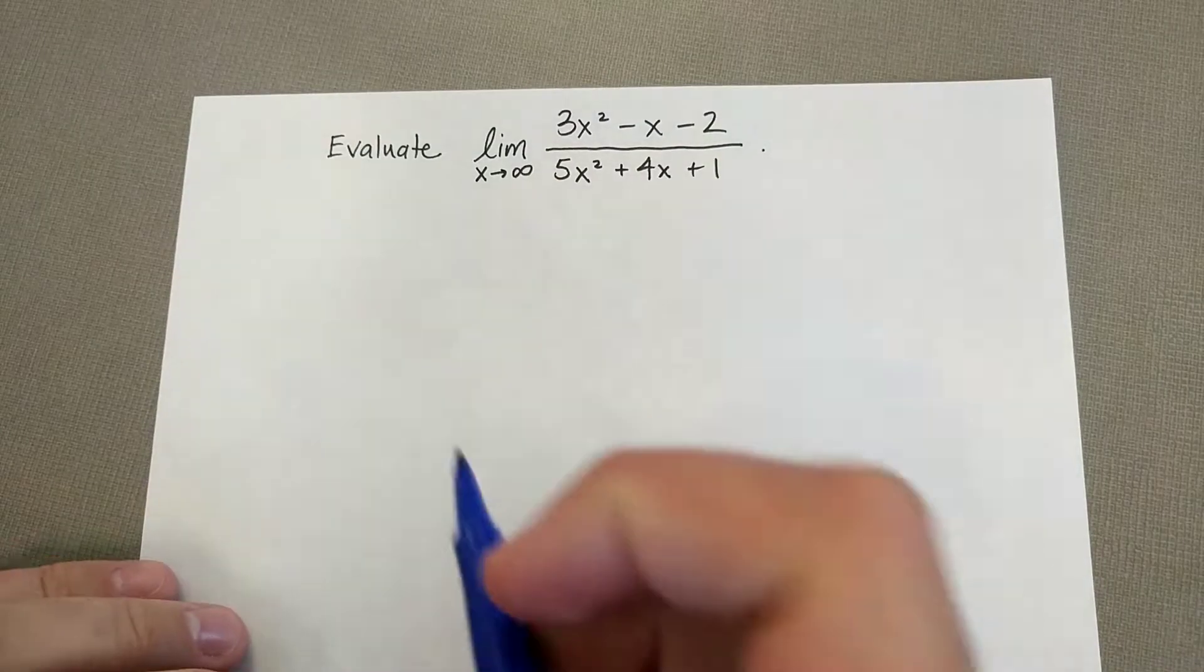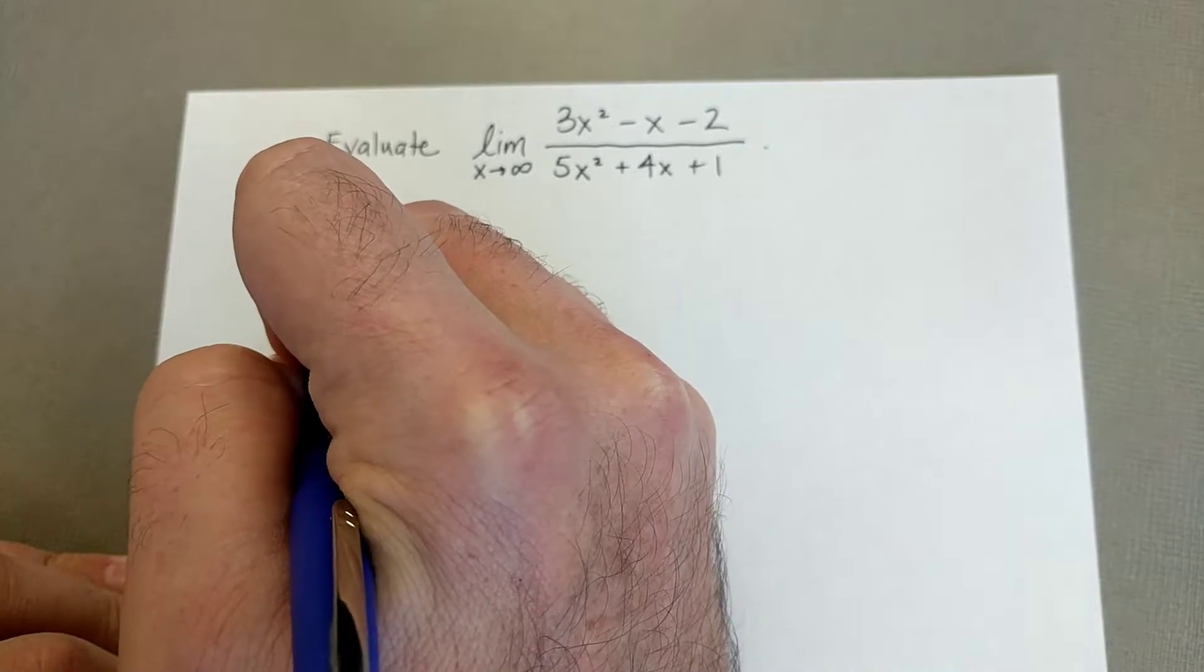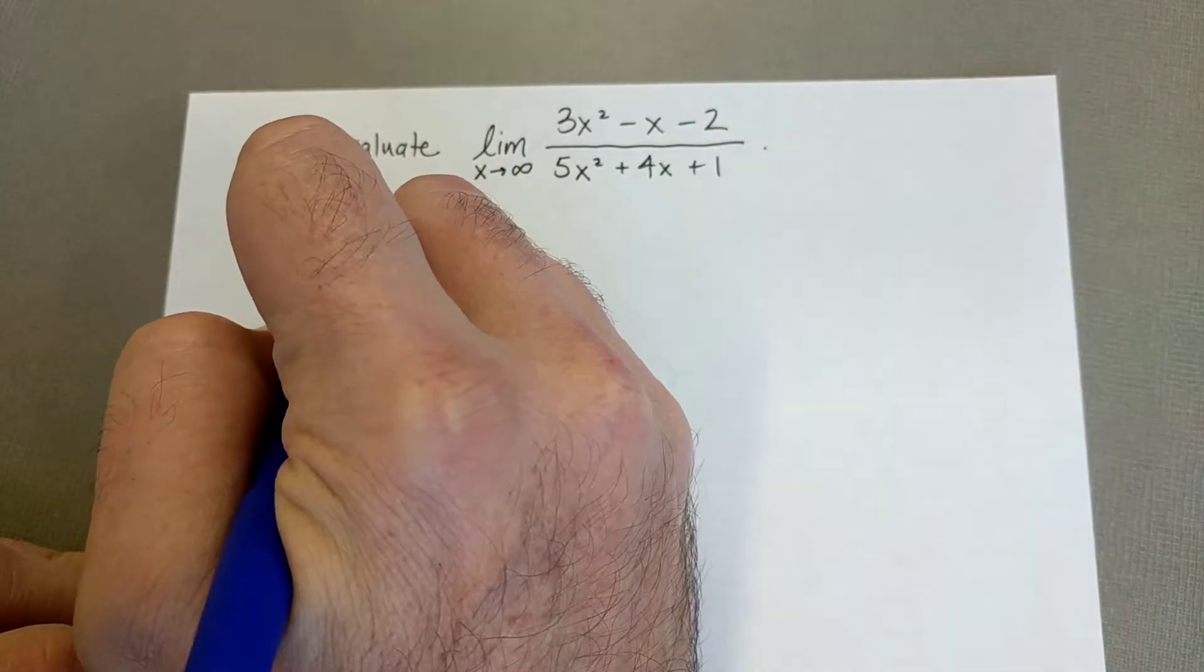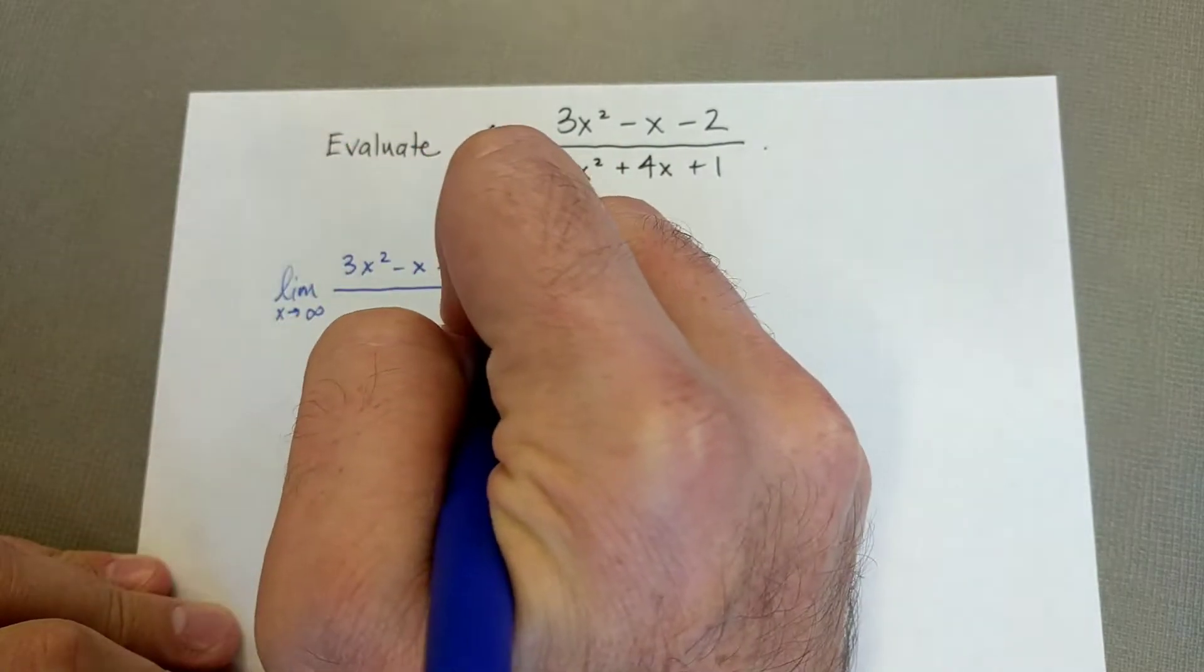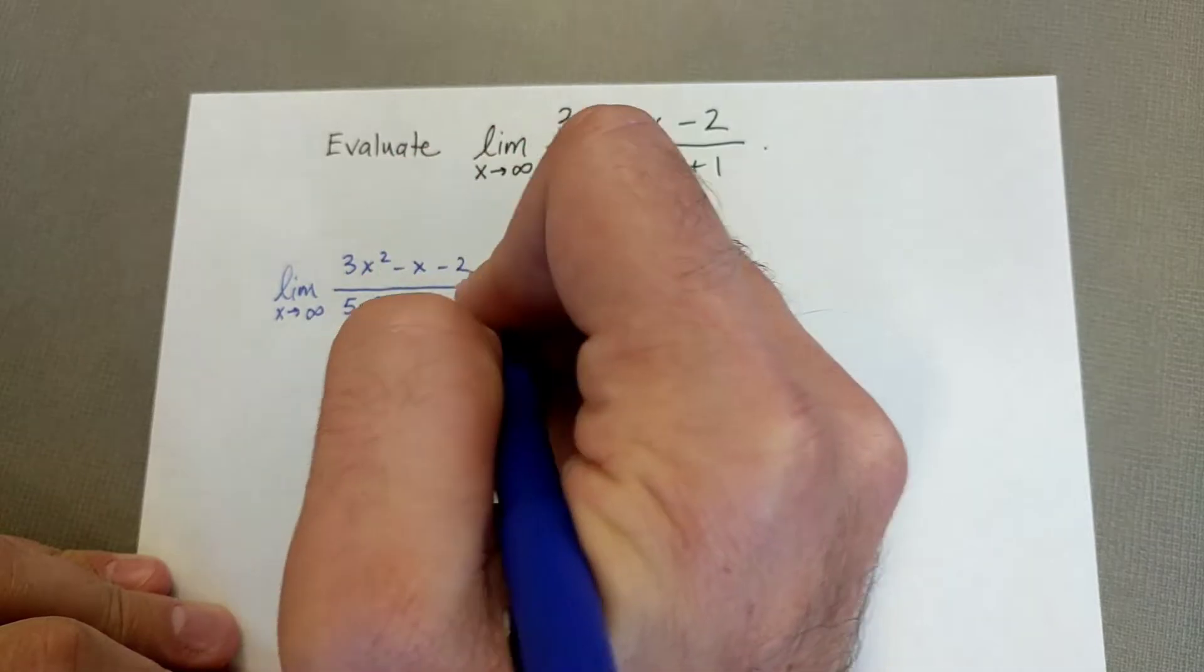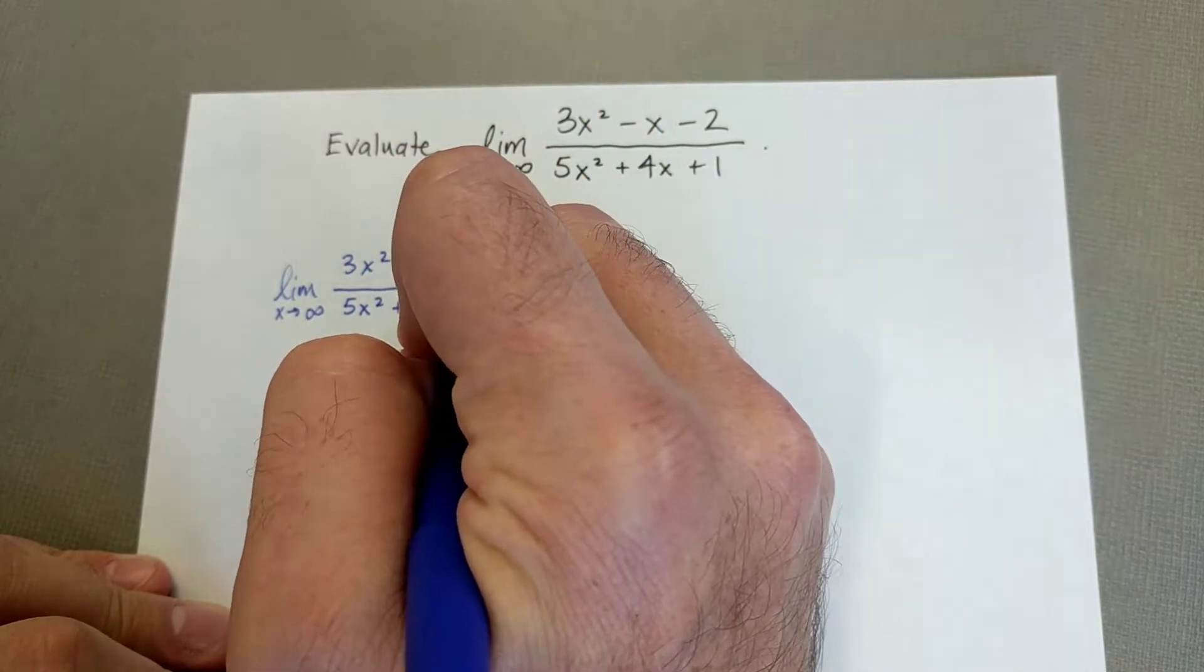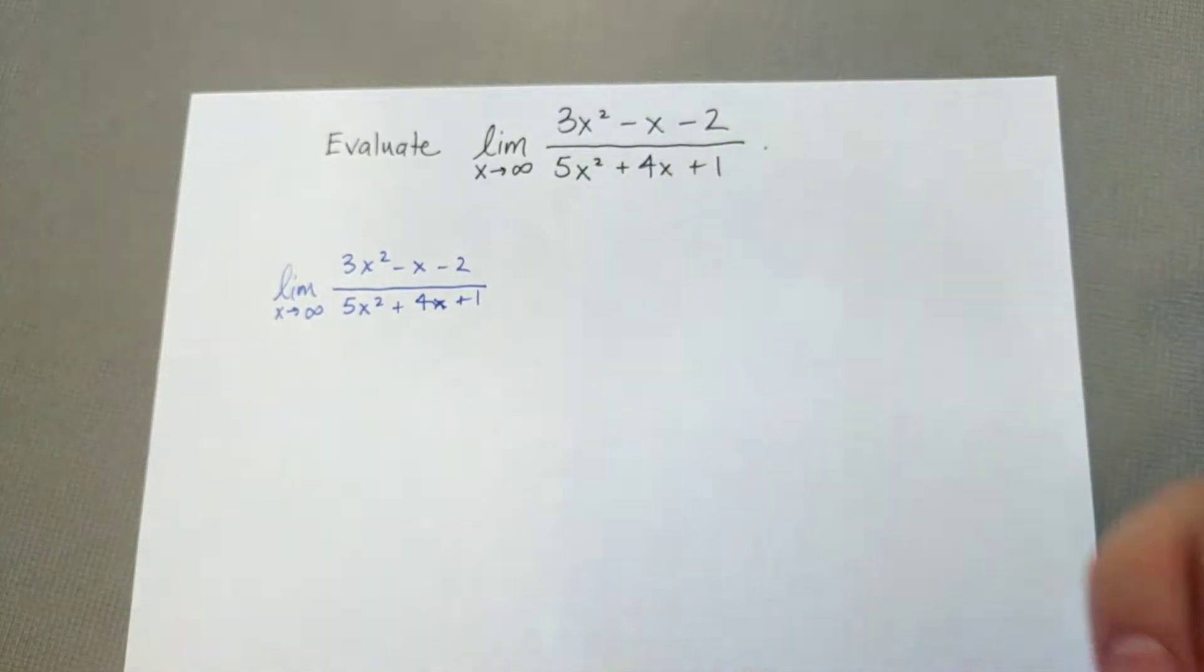So we want to evaluate this limit. I'm going to go ahead and rewrite it. The limit as x approaches infinity of 3x squared minus x minus 2 all over 5x squared plus 4x plus 1. Okay.